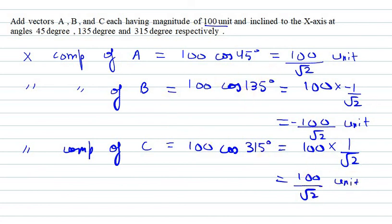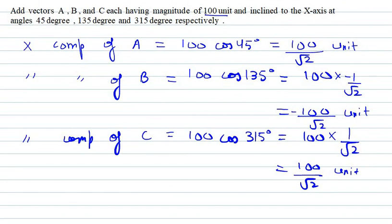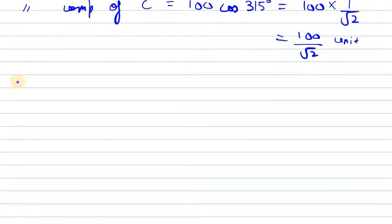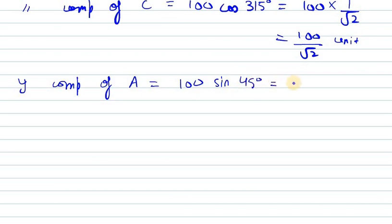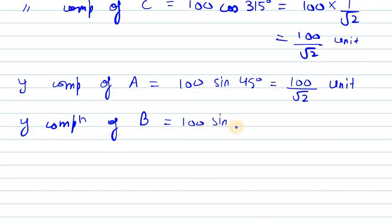Now we need to find the y-component similarly for all cases. Remember that we take the sine of the angle for y-components. The y-component of A is 100 sin 45°, and sin 45° is 1/√2, giving 100/√2 units. The y-component of B is 100 sin 135°, which is again 1/√2, so 100/√2 units.